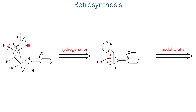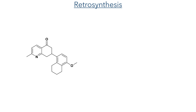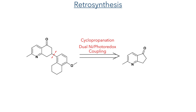Disconnecting a carbon-carbon bond between the aryl ring and the carbon bearing the tertiary hydroxyl group leads to a Friedel-Crafts type reaction, and the tetracyclic precursor to this could be synthesised using cyclopropanation and a dual nickel photoredox coupling of a commercially available pyridine building block.